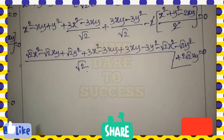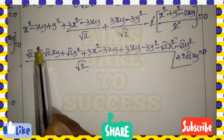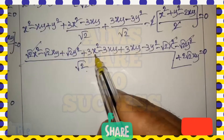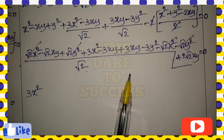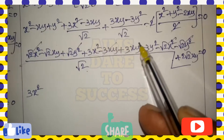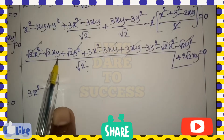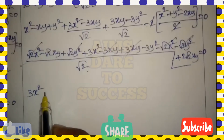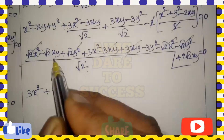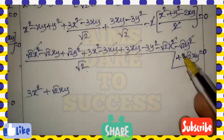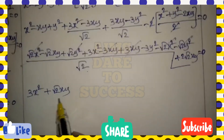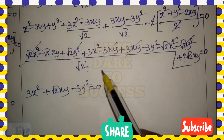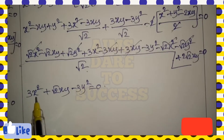Simplifying: -√2·x² + √2·x² cancel; √2·y² - √2·y² cancel. The remaining x² term is 3x². For xy terms: 2√2·xy - √2·xy = √2·xy (using 2a - a = a), and the middle 3xy - 3xy cancel. The remaining y² term is -3y². So the final equation is 3x² + √2·xy - 3y² = 0... actually 3x² + 2√2·xy - 3y² = 0.